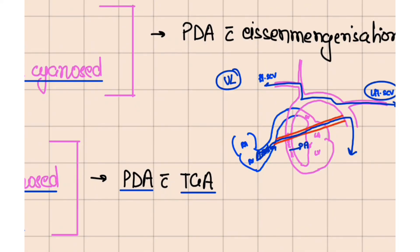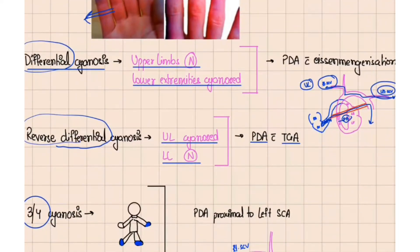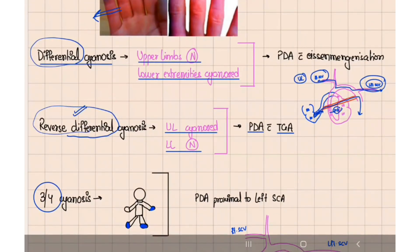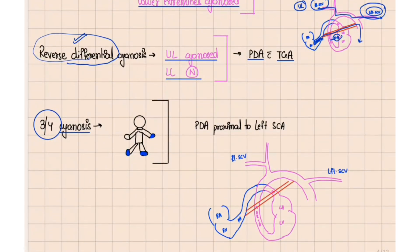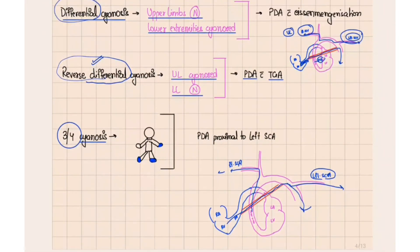In reverse differential cyanosis, the upper limbs are cyanosed while the lower limbs are normal. This occurs in PDA with Eisenmenger's syndrome combined with transposition of the great vessels: the aorta gives oxygenated blood to the lower body while the pulmonary artery gives deoxygenated blood to the upper body, so lower limbs are normal and upper limbs are cyanosed. Three-by-four cyanosis refers to cyanosis in three out of four limbs, occurring when PDA is proximal to the left subclavian artery — the aorta gives oxygenated blood to the right subclavian artery and right upper limb, while deoxygenated blood goes to the left upper limb and both lower limbs.